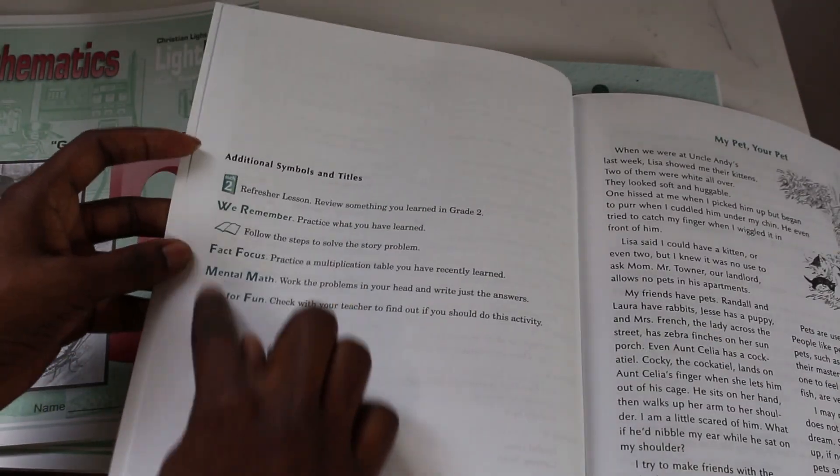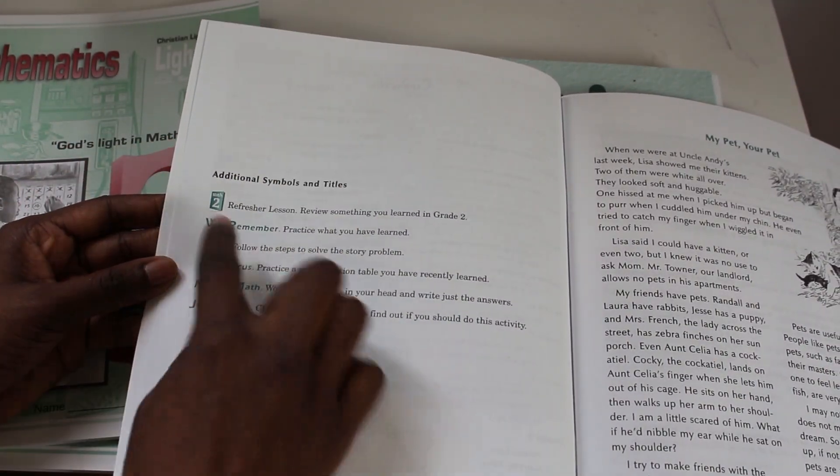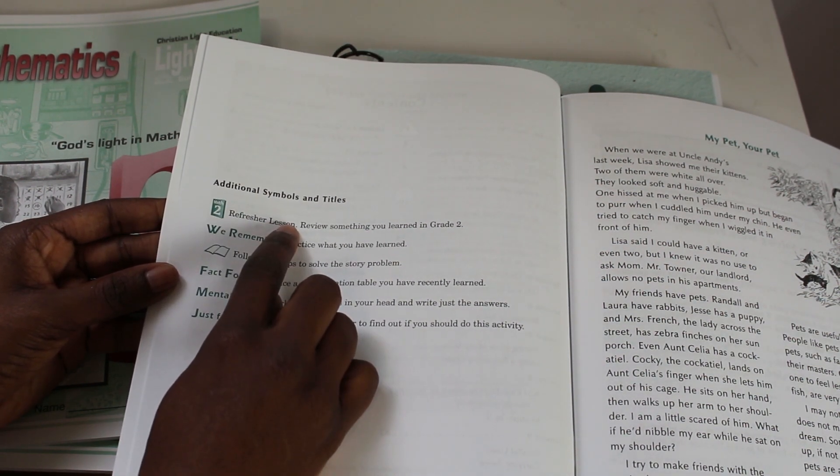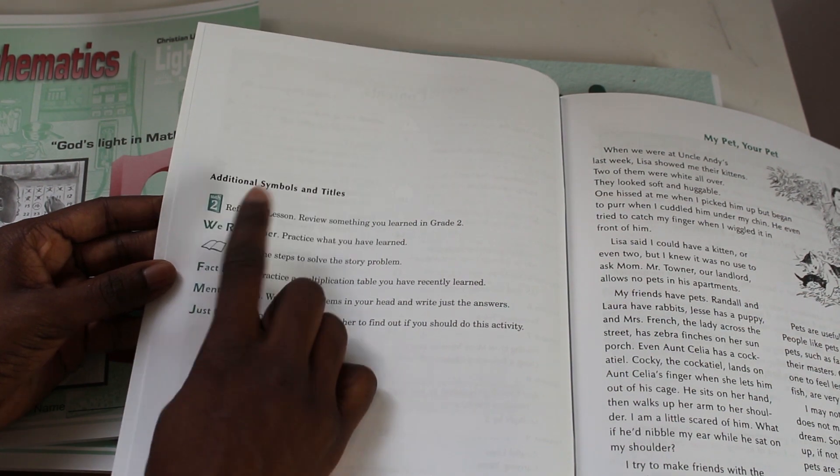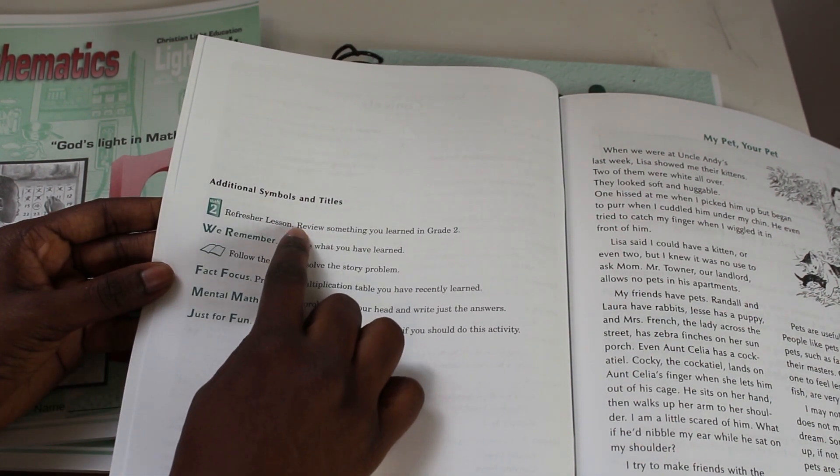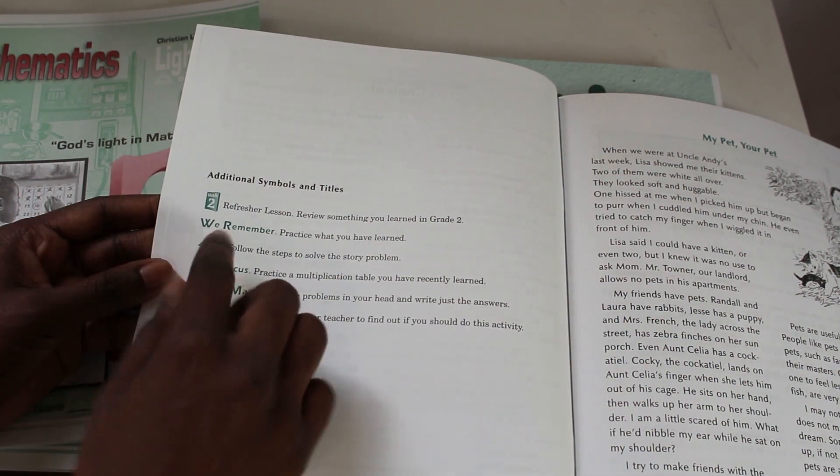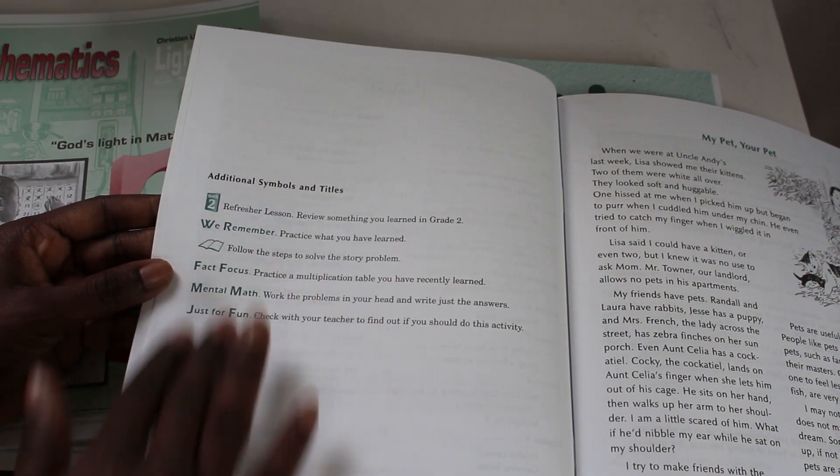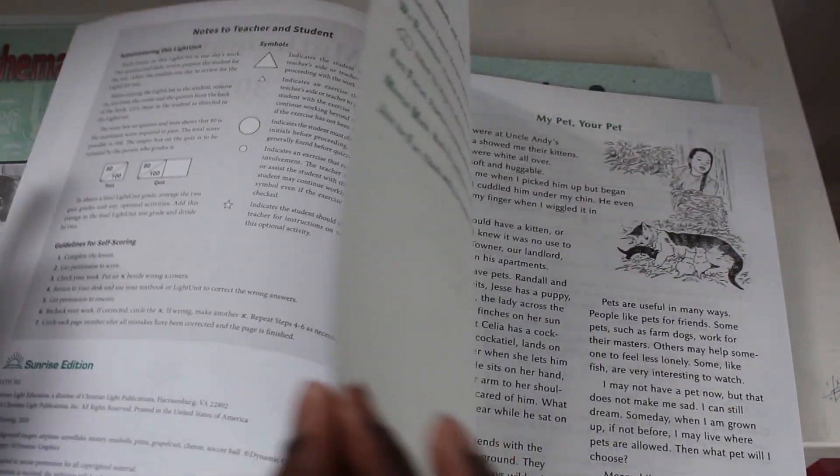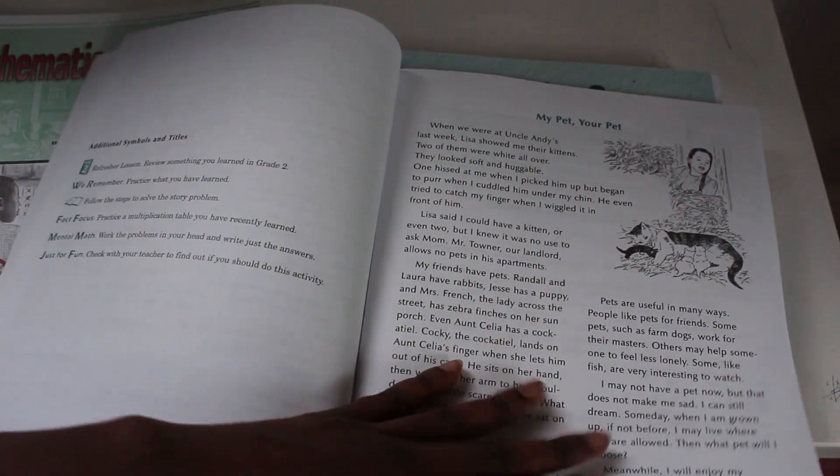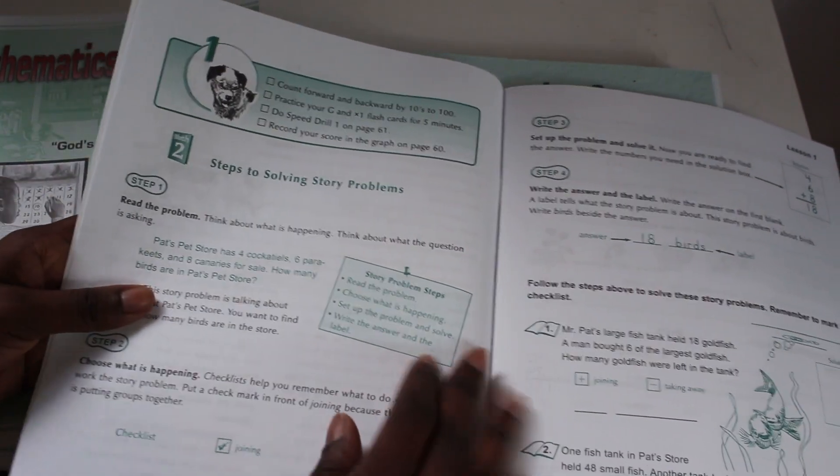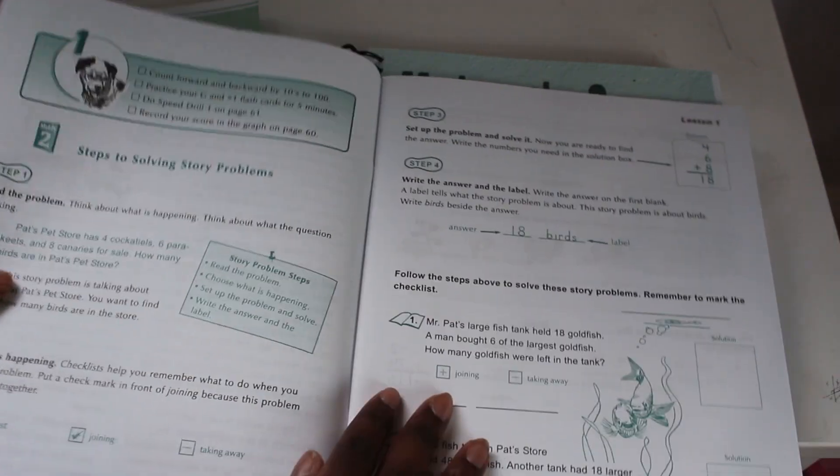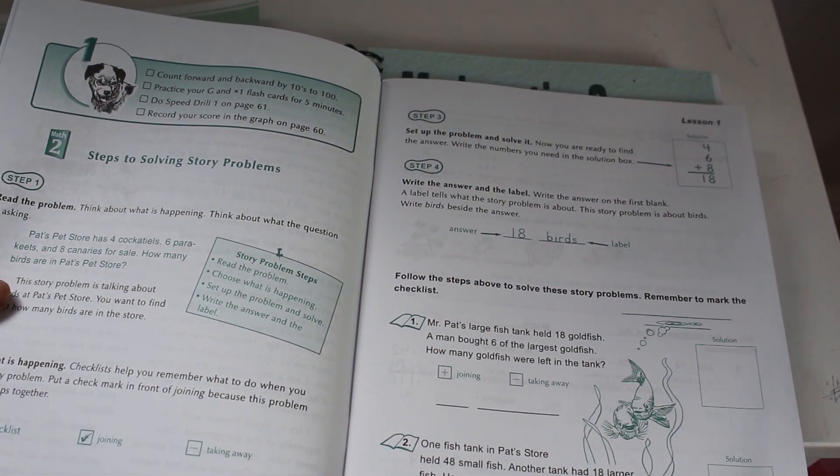So there are always symbols that you will see. And so when you see math two, that's a refresher to review something that they learned in grade two. You'll see the we remember, and it will look exactly like this. So it goes through the symbols in order for your child to understand when they see them what to expect. Always starts off with a story. It starts off with the review on steps for solving story problems.